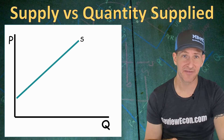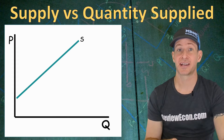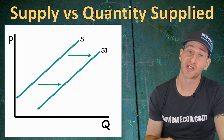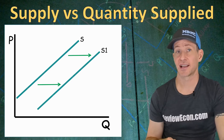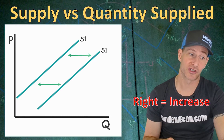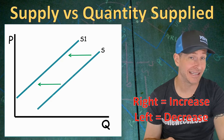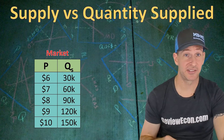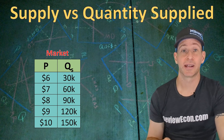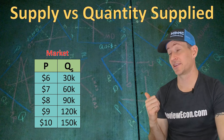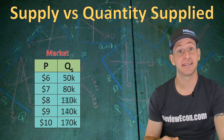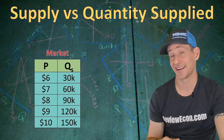If there's a change in the quantity at every single price, that will be illustrated as a shift of the supply curve — and when there's a shift, we call it a change in supply. Just like with demand, a rightward shift is an increase in supply and a leftward shift is a decrease in supply. On the market schedule, a change in supply is illustrated as a change in quantity at every single price: an increase in supply means more bushels at every price, and a decrease means fewer bushels at every price.